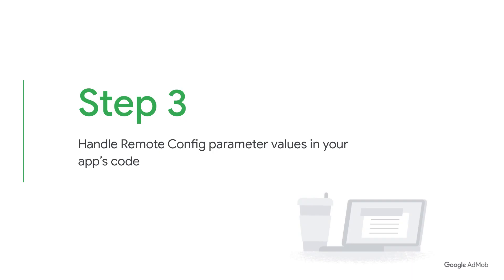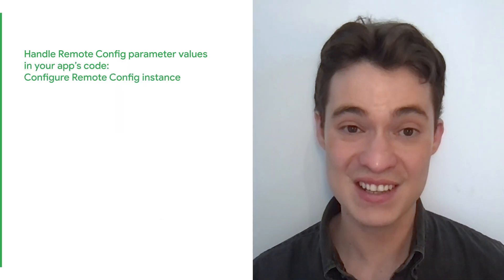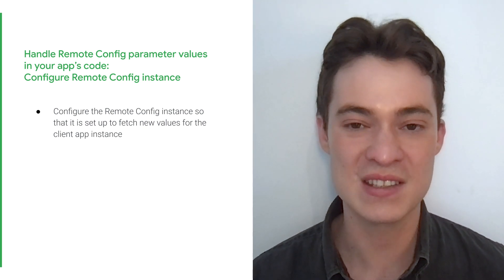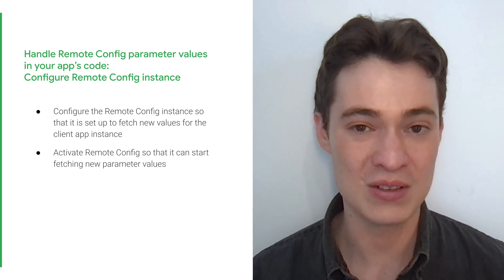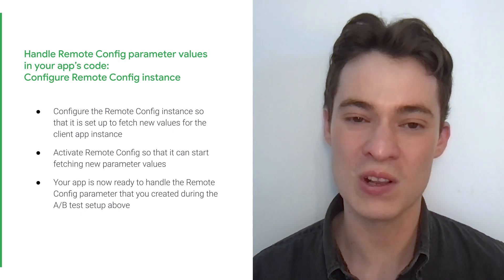These values are set in Firebase A/B testing, but it's Firebase Remote Config that sends these values to your app's code for handling. You'll set up Remote Config in the next step. In your own future tests, we recommend giving variants meaningful names to easily track the test results later on. Before starting the experiment, you will need to define how your app's code will react to the true or false parameter values received from Firebase. Now we'll move on to handling Remote Config parameter values in your app's code. We recommend using the latest version of each SDK available. Before using Remote Config in your application code, add both the Remote Config SDK and the Firebase SDK for Google Analytics to your project build files. Next, configure the Remote Config instance so that it is set up to fetch new values for the client app instance. Then activate Remote Config so that it can start fetching new parameter values. Your app is now ready to handle the Remote Config parameter that you created during the A/B test setup. You'll want to make this call as early as possible in your app's loading phase.